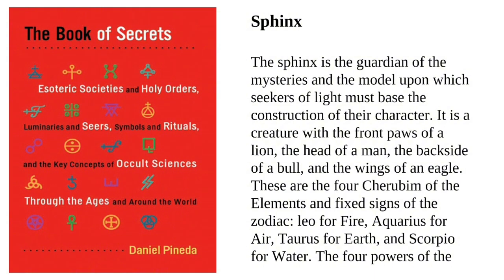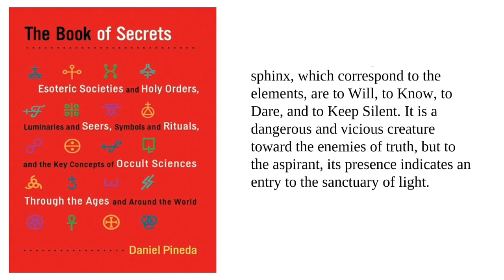Sphinx. The Sphinx is the guardian of the mysteries, and the model upon which seekers of light must base the construction of their character. It is a creature with the front paws of a lion, the head of a man, the backside of a bull, and the wings of an eagle. These are the four cherubim of the elements and fixed signs of the zodiac: Leo for fire, Aquarius for air, Taurus for earth, and Scorpio for water. The four powers of the Sphinx, which correspond to the elements, are to will, to know, to dare, and to keep silent. It is a dangerous and vicious creature toward the enemies of truth, but to the aspirant, its presence indicates an entry to the sanctuary of light.